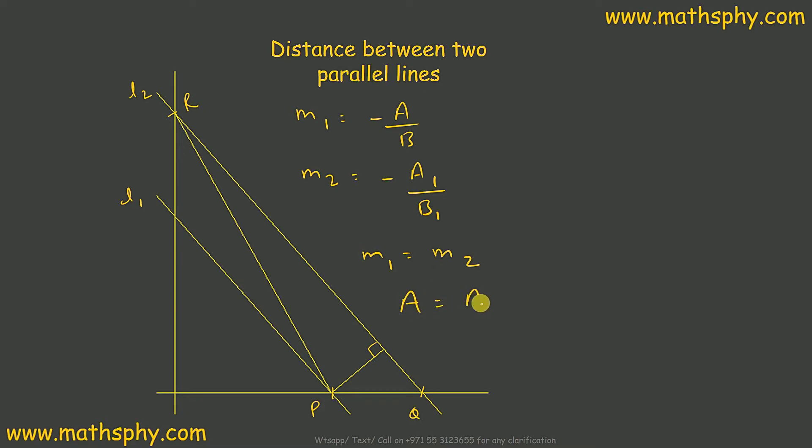This will give me, if I take this line l1 as ax plus by plus c1 equals 0, and l2 will be ax plus by plus c2 equals 0.